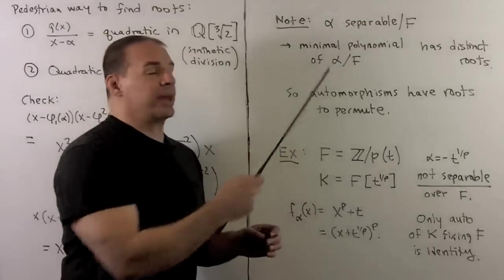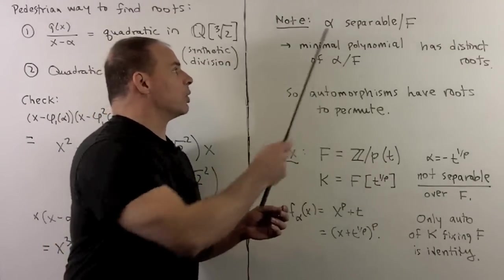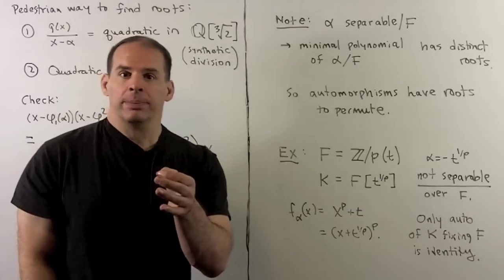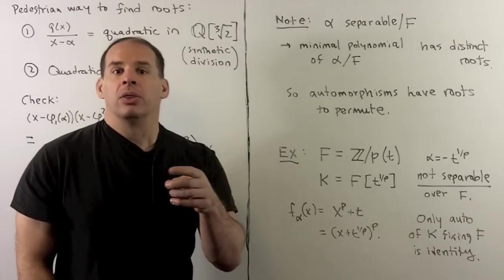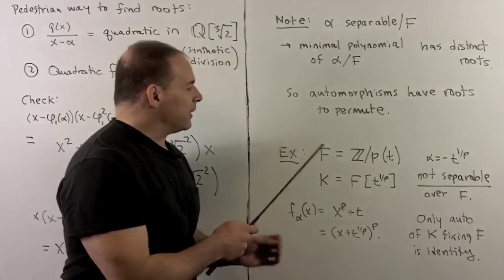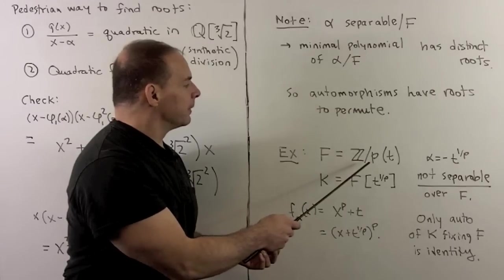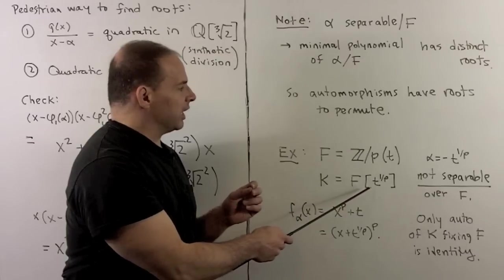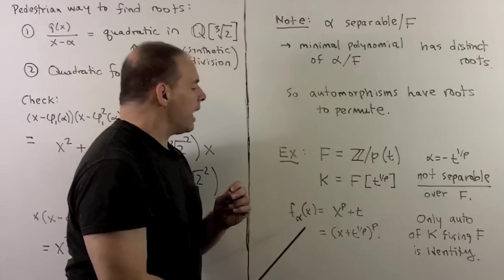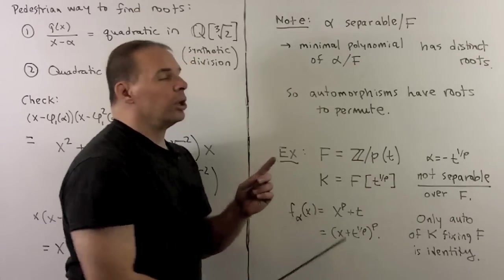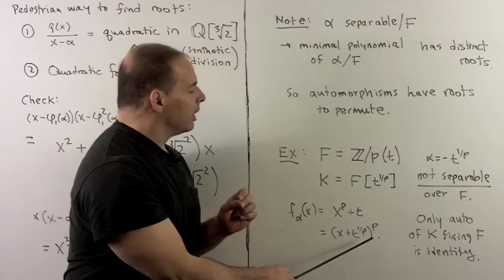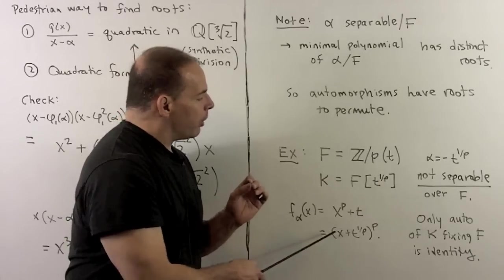Final note: recall the notion of separability. An element α is separable over F if the minimal polynomial of α over F has distinct roots. This is important because it means that when we go to automorphisms of the splitting field, roots will actually permute around. For example of a non-separable case: let F = 𝔽_p(t) (rational functions in t over 𝔽_p), and K = F(t^{1/p}). The element α = t^{1/p} is not separable over F — its minimal polynomial is x^p + t = (x + t^{1/p})^p in characteristic p — so the minimal polynomial has only one root of multiplicity p, and the only automorphism of K fixing F is the identity.